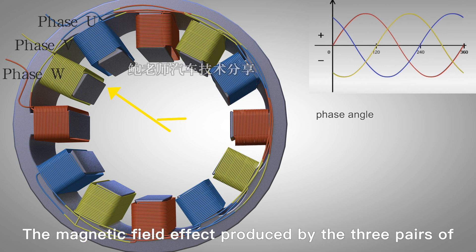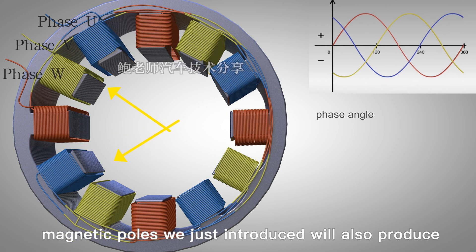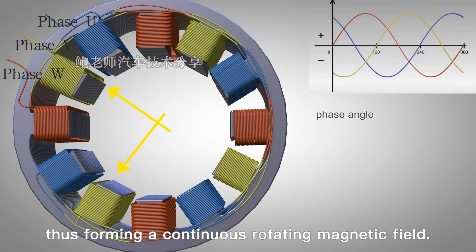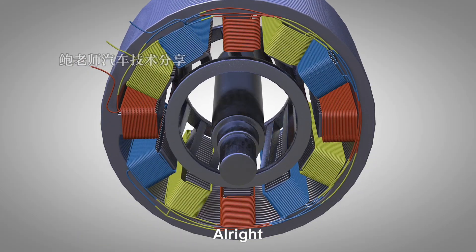The magnetic field effect produced by the three pairs of magnetic poles we just introduced will also be produced by the other three pairs of magnetic poles, thus forming a continuous rotating magnetic field.